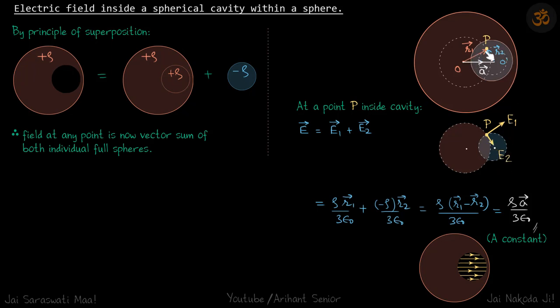And position vectors of P with respect to first sphere is r₁, and with respect to second sphere let's say its position is r₂ vector. And let's also say that the line joining the two spheres from positive to negative, let's call it a vector.